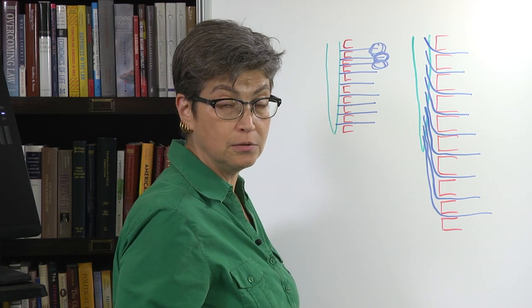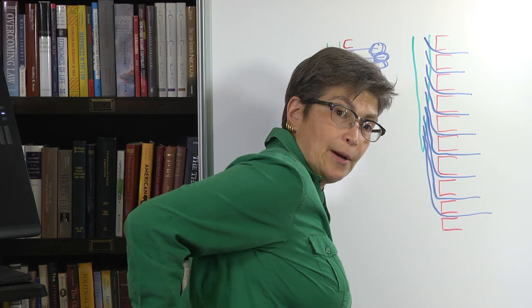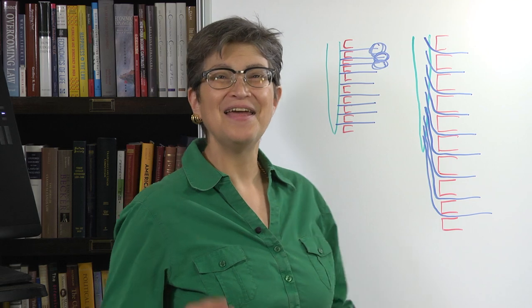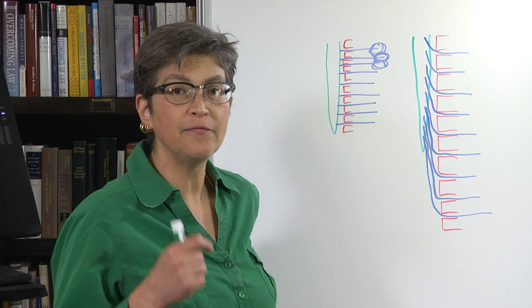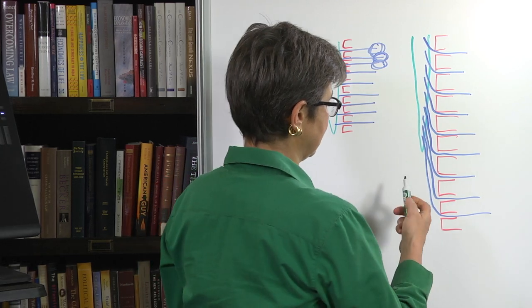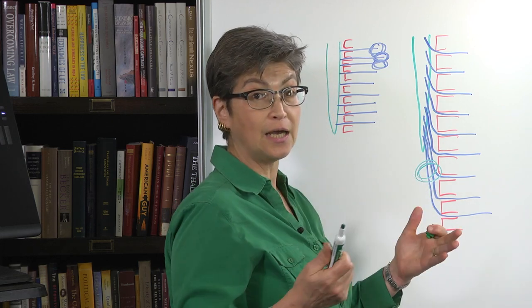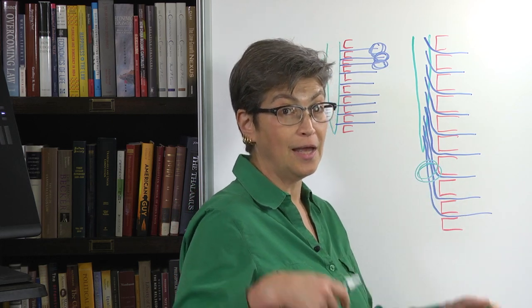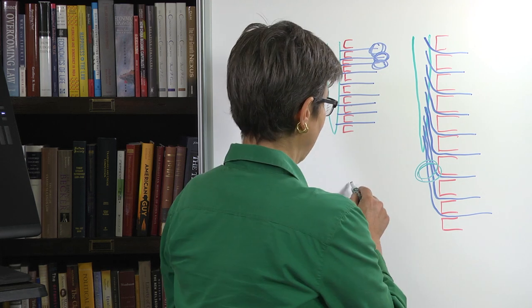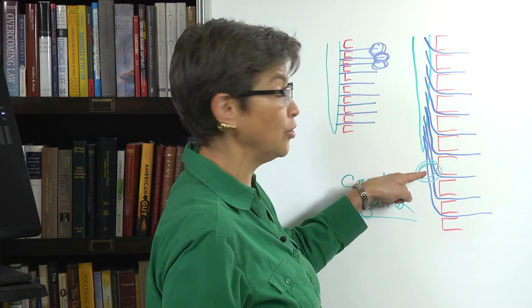In an adult, the spinal cord ends just below the rib cage, so above the small of the back. And beyond that is this collection of roots, which looks like a horse's tail. The Latin word for that is cauda equina, and this collection is called the cauda equina.